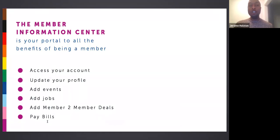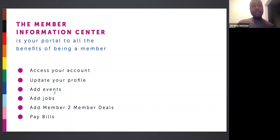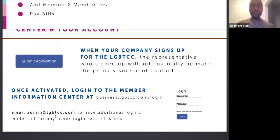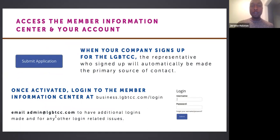Once you are logged in, it will take you to the member information center. In the member information center, you can access your account, and from there it allows you to update your profile, add events, add jobs, add new deals, and pay any invoices or outstanding bills. To access the information center, you go to the member page and then log in at the portal. If you have any challenges, you can always email Allie at admin@lgbtcc.com and she can assist you.